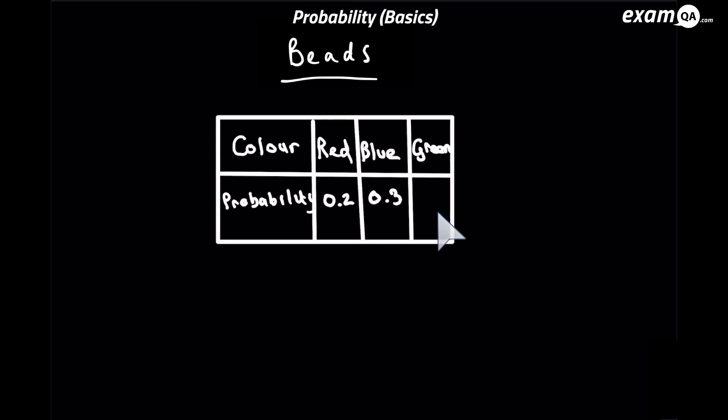So we know the probability of getting a red bead and a blue bead. And adding them up gives us 0.5. Now there's only one remaining number left and you know these need to add up to 1. So you simply do 1 minus the total of the ones you do know, which is 0.5.